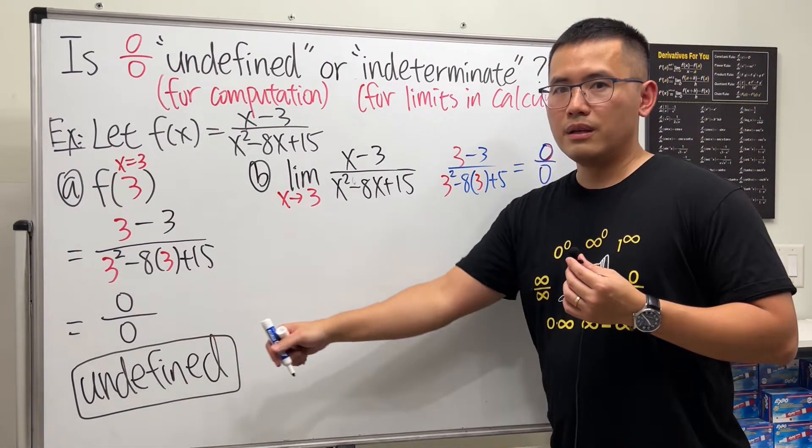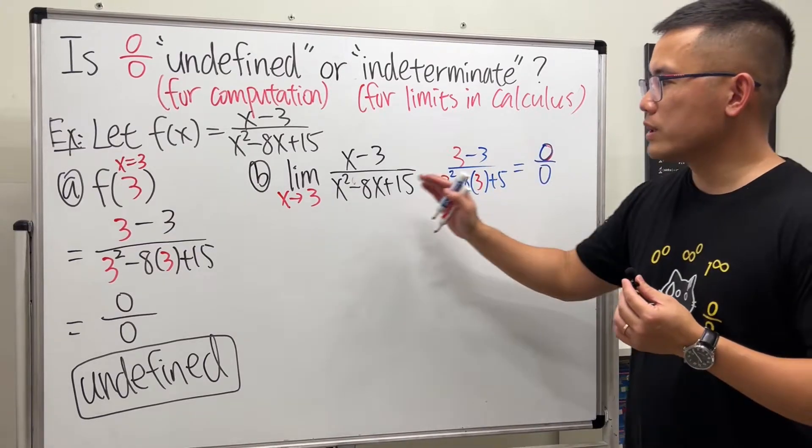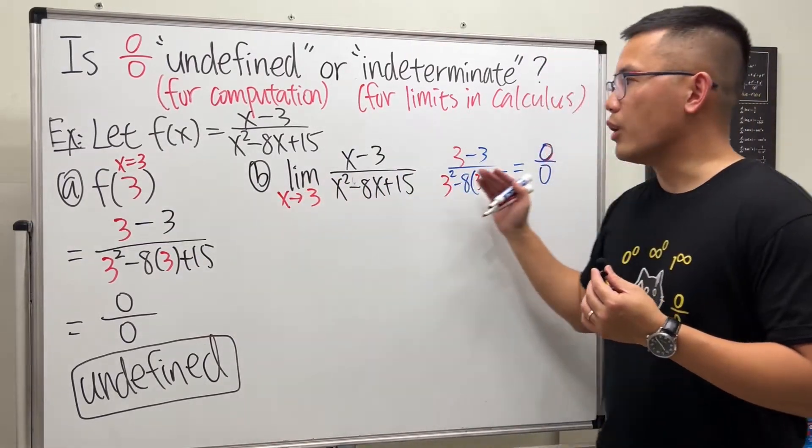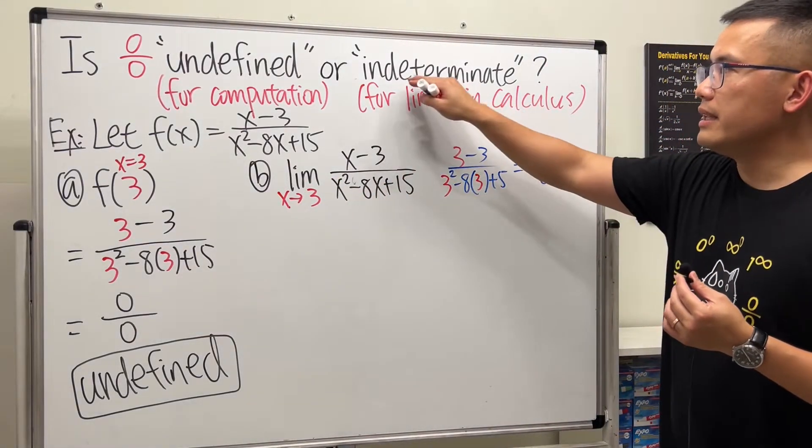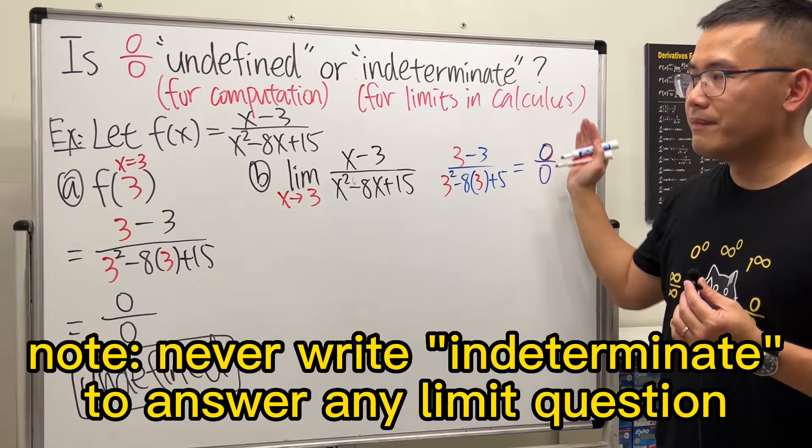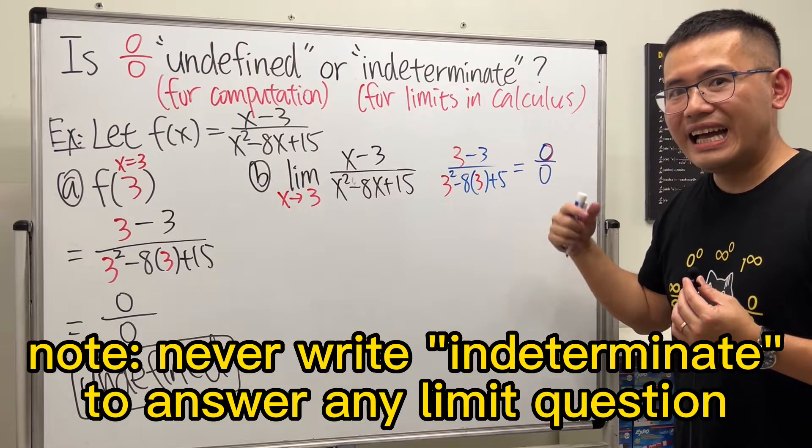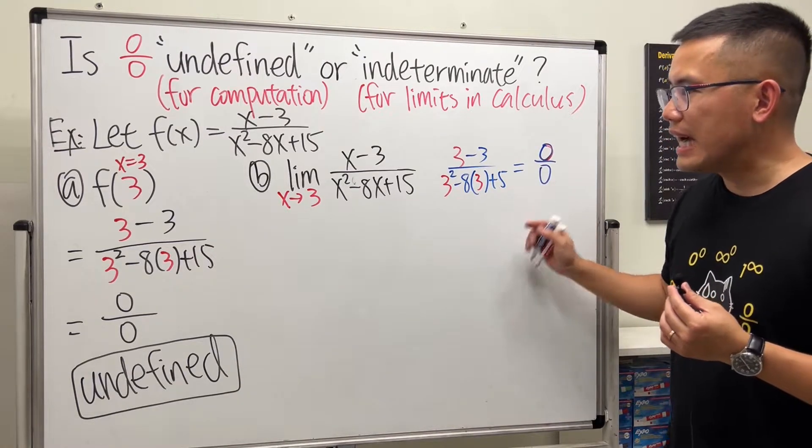But here, because we are talking about a limit question, so this 0 over 0 is an indeterminate form. We don't know what the answer is yet unless we do more work.